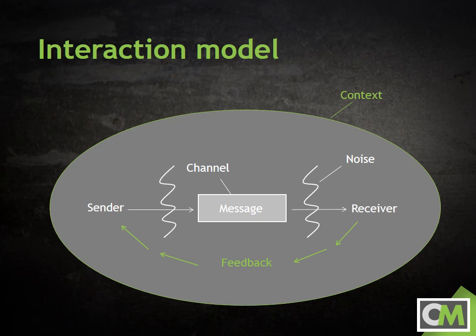The other new element in the interaction model is context — sometimes called the environment or the situation — which refers to the physical and psychological circumstances in which communication takes place. Communication does not take place in a vacuum; it happens somewhere, at some time, between someones. You don't have the same conversation in the produce section of a grocery store that you do over a romantic candlelight dinner. The topics, tone, and volume are all different, and these things also vary depending on whether you're speaking with your best friend or someone you hardly know. This is the impact of context. With the addition of feedback and context, the interaction model represents a leap forward, though it was still a work in progress, as you'll see in the transactional model.